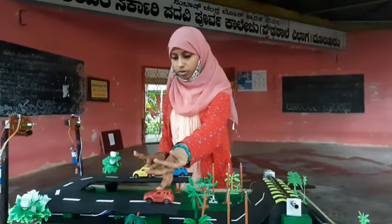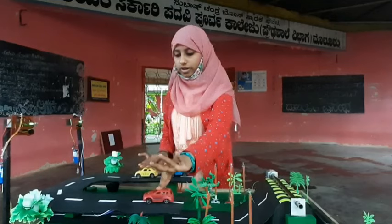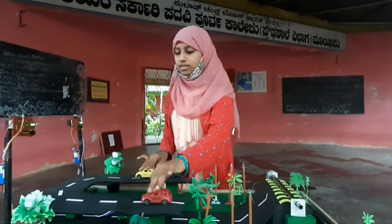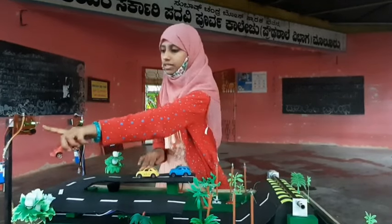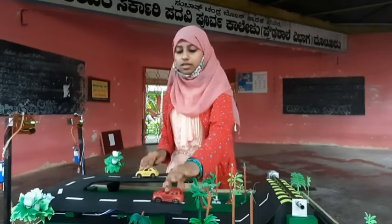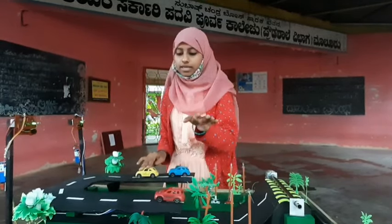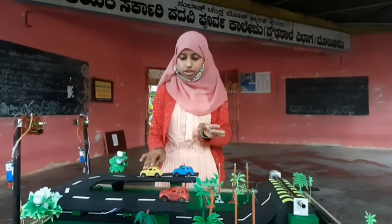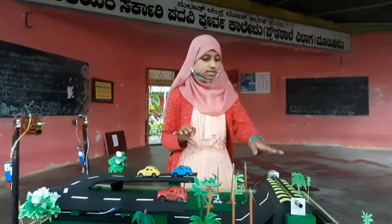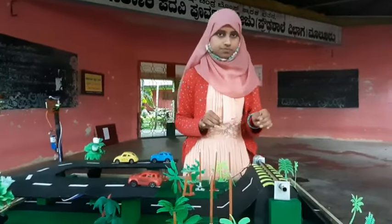If no vehicle is on the road, it shows a green light. That means the road is safe and you can travel. It gives a safe journey. This is the speed breaker.